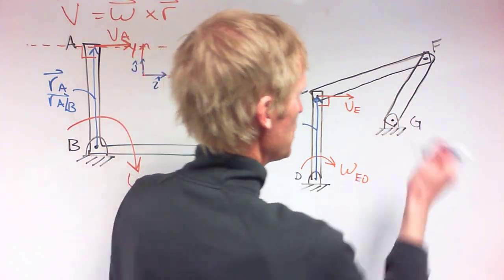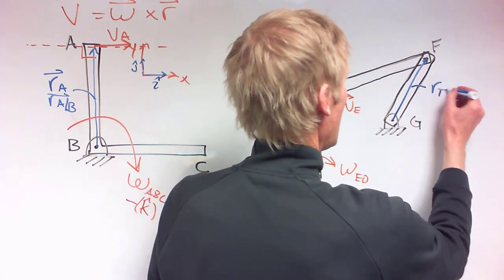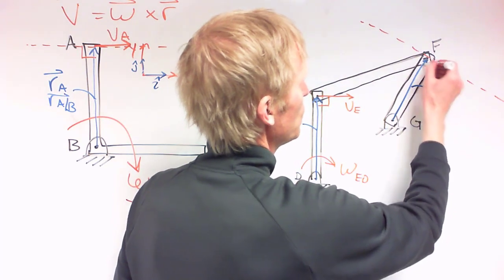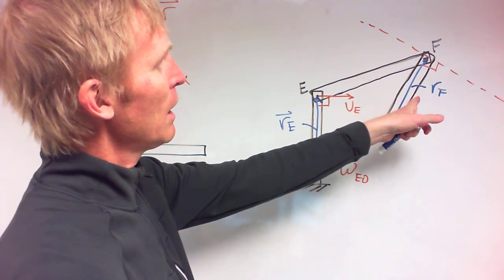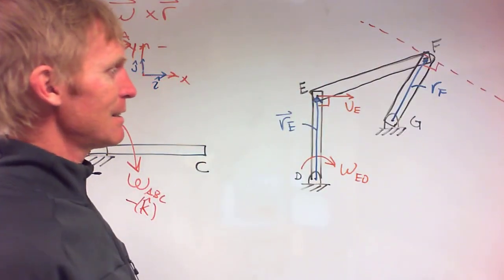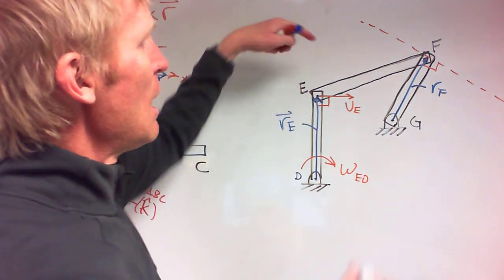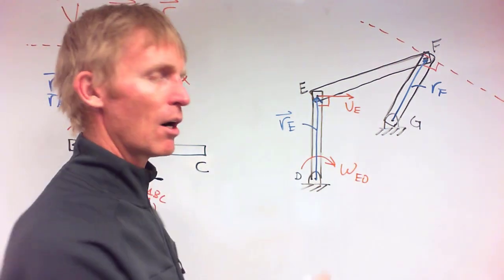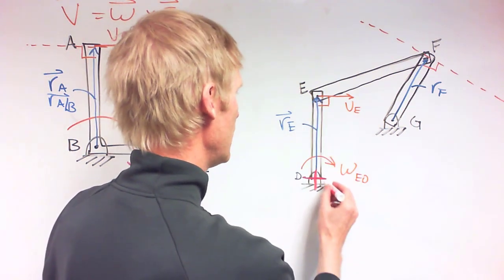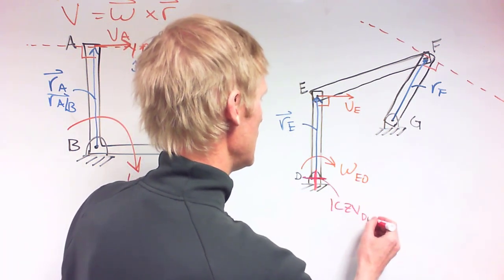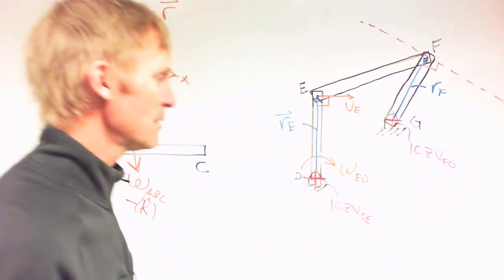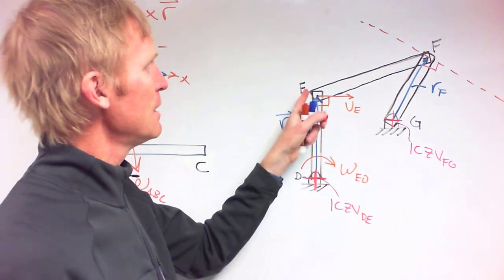Point F is also in fixed-axis rotation about point G. Adding the absolute position vector r of F, I know velocity of F must be perpendicular to that position vector. I don't yet know if it's going up to the left or down to the right, but it lies along that line. To determine this, I need to find the instantaneous center of zero velocity (ICZV) of member EF. The ICZV of DE is at the fixed pin, and the ICZV of FG is at its fixed pin.